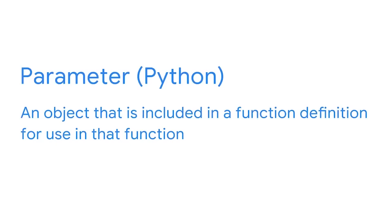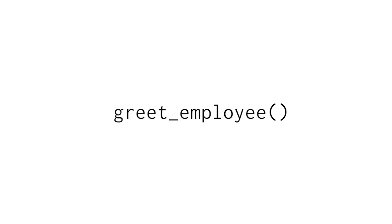We need to talk about using parameters in functions. In Python, a parameter is an object that is included in a function definition for use in that function. Parameters are accepted into a function through the parentheses after a function name.